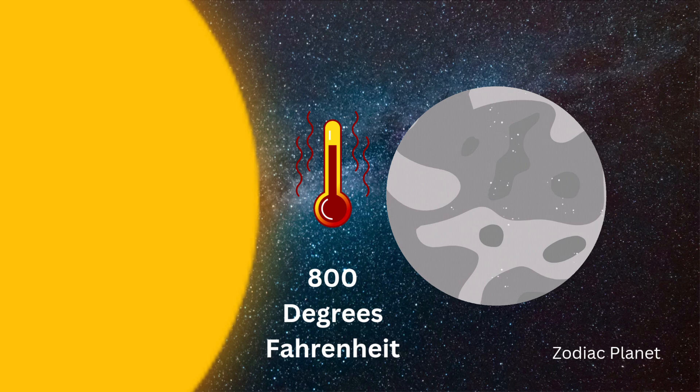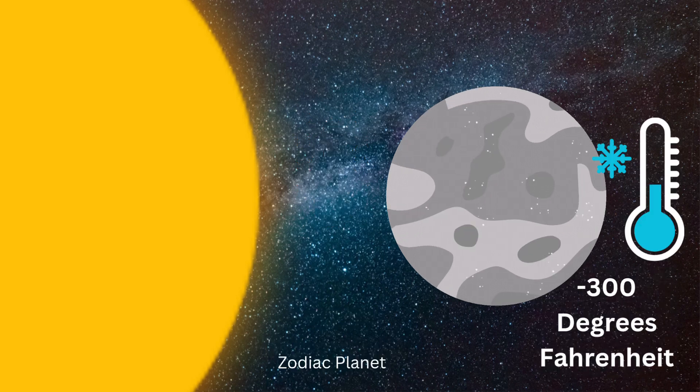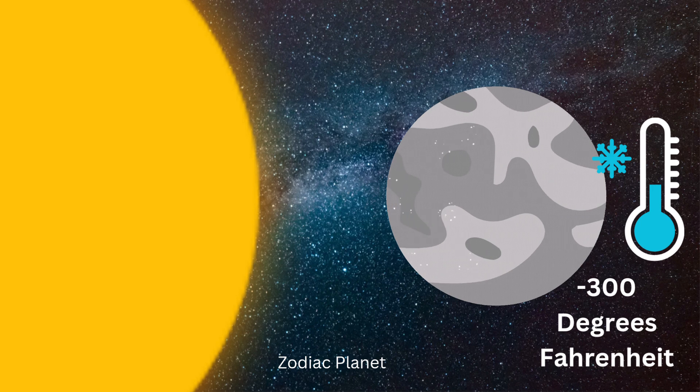On the side of Mercury that faces the Sun, temperatures can reach 800 degrees Fahrenheit. On the side of Mercury that faces away from the Sun, temperatures can plunge to minus 300 degrees Fahrenheit.